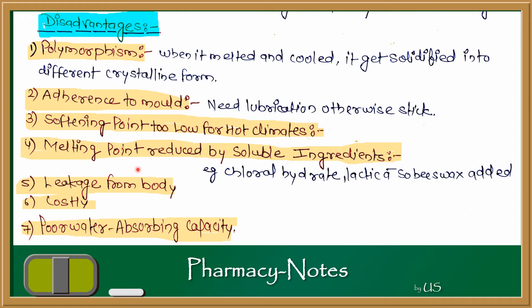The fourth disadvantage is that the melting point is reduced by soluble ingredients. If we add chloral hydrate, lactic acid, or beeswax to the theobroma oil, we can increase the melting point. Fifth is leakage from the body — as it is inserted, the body temperature is higher so it will be completely liquefied, causing discomfort to the patient. Sixth, it is costly due to its particular natural plant source. Seventh, poor water absorbing capacity — water is not absorbed properly, so while it will release in body cavities, penetration will be a problem.